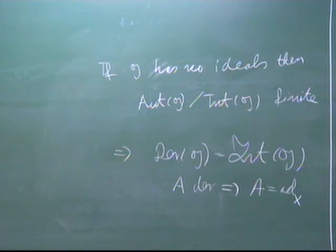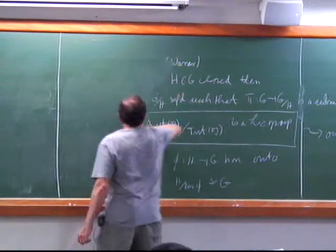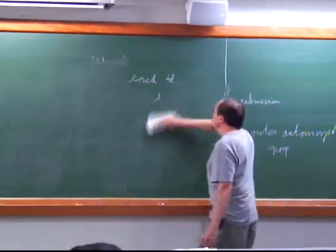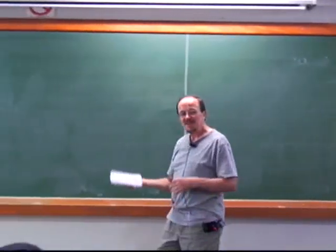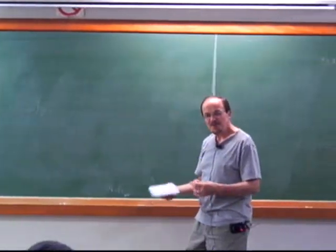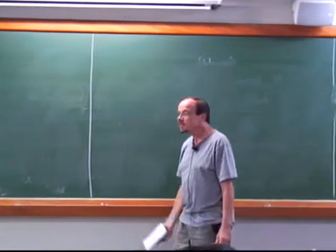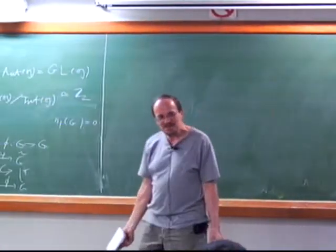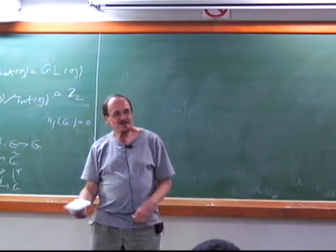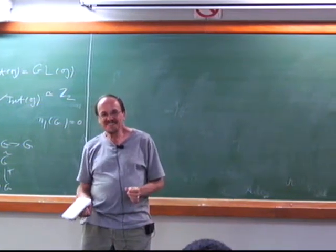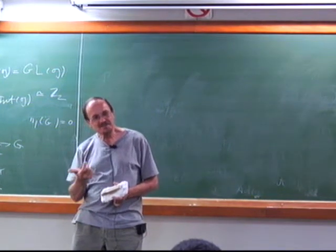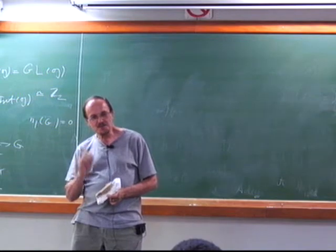That's not so easy to prove. If you've already seen things like semi-simple algebras and root space decomposition, one has to use all that structure to prove this. Does anyone know what a Dynkin diagram is? Anyone had a course on Lie algebras already? No? It's a symmetry of the Dynkin diagram — that's what this group is; that's what one proves.